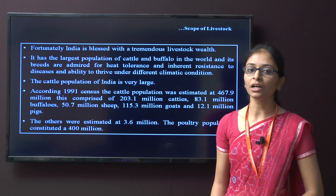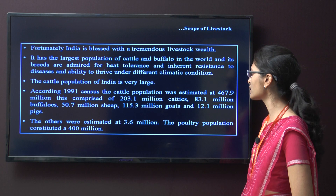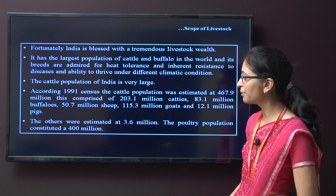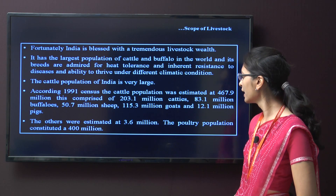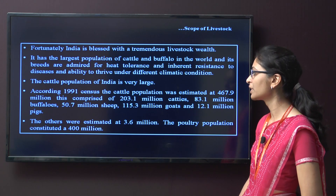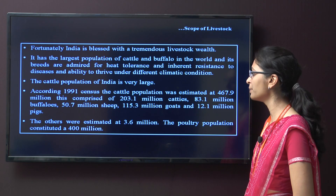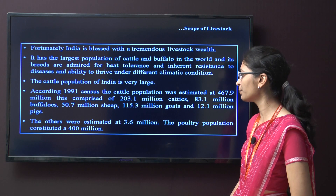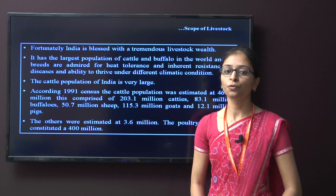The cattle population of India is very large. According to the 1991 census, the cattle population was estimated at around 467.9 million, comprising of about 203.1 million cattle, 83.1 million buffaloes, 50.7 million sheep, 115.3 million goats, around 12.1 million pigs, and others estimated at around 3.6 million. The poultry population consists of around 400 million.